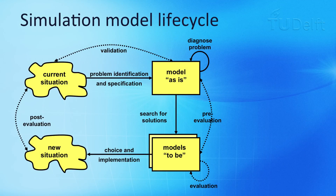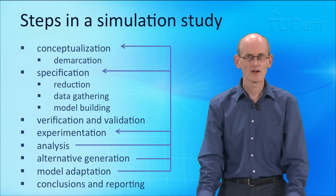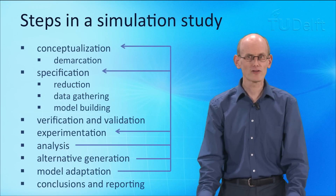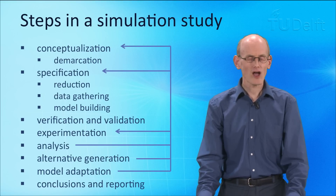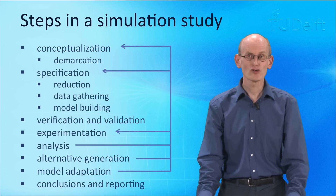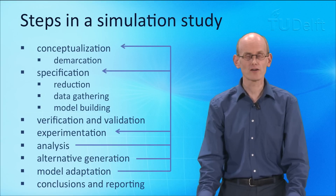We build the model, diagnose the problem, test whether the model corresponds to the real system — we call that validation — build alternative models, evaluate them, look for solutions, and hopefully we find solutions we can implement in the actual system. The next steps are called conceptualization, specification, verification and validation, and analysis. These steps are often carried out in a more iterative manner, meaning we go back to earlier steps that we have not yet or have already carried out.